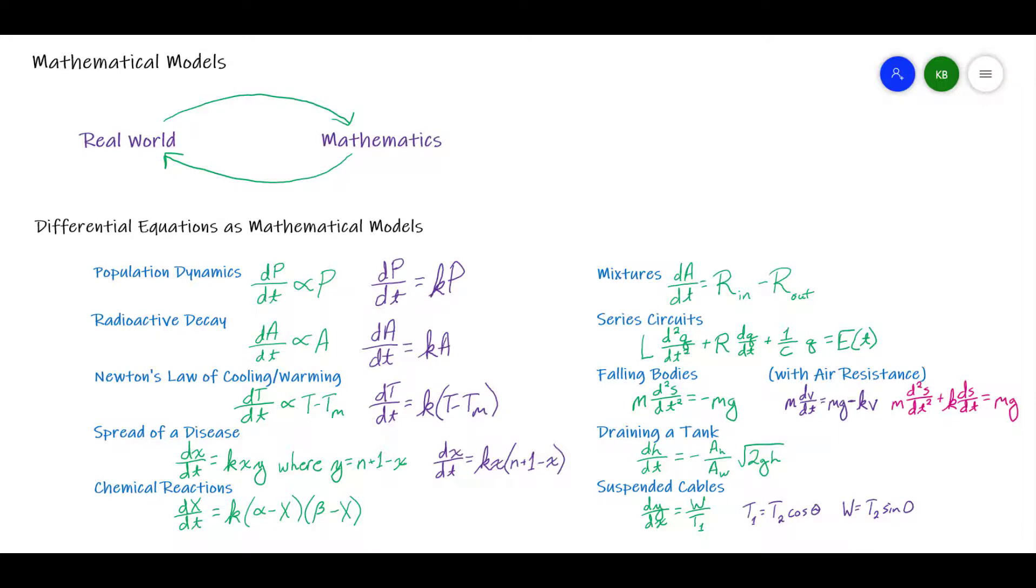Newton's law of cooling and warming also is a differential equation. When we model the spread of a disease, we use a differential equation. When we model chemical reactions, we use a differential equation.